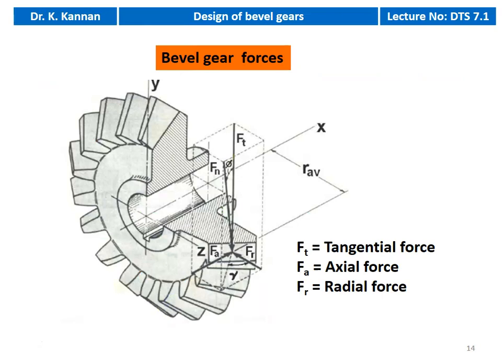The forces on a bevel gear tooth are tangential force, axial force, and radial force. The normal force acting on the tooth is resolved in these three directions. The axial and radial forces are taken care of by the bearings and do not contribute to useful power transmission. The tangential force is what transmits power from the pinion to the gear. The smaller wheel is the pinion and the larger wheel is the gear.